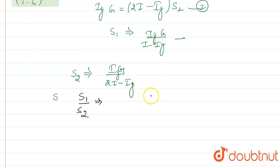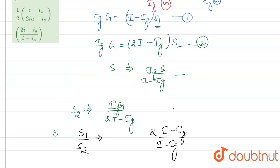So the ratio of S1 and S2, S1 by S2, we get the ratio of 2I minus IG upon I minus IG.